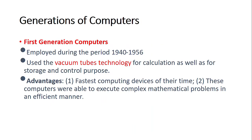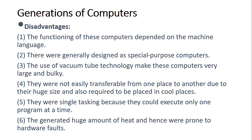The first generation of computers were employed between 1940 and 1956. They used a technology known as vacuum tubes. These vacuum tubes had many disadvantages, though they had some advantages too. The first advantage is that these computers were able to compute complex mathematical problems. They were considered the fastest computers of that time, but they were very slow and had a lot of failures and bottlenecks.